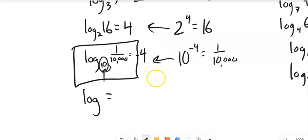So log itself, without any specified base, means log base 10. It's called the common log. It's because we have a base 10 number system. So if I go log of 1,000, well, that's 10 times 10 times 10.